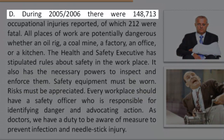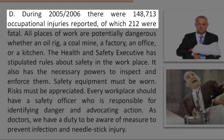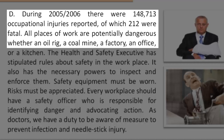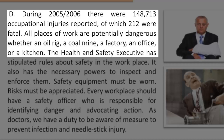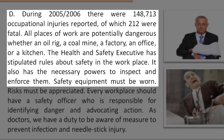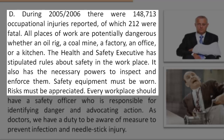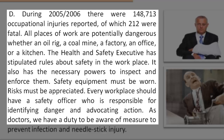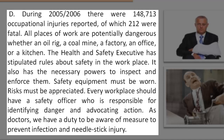Reading 4. During 2005 and 2006, there were 148,713 occupational injuries reported, of which 212 were fatal. All places of work are potentially dangerous, whether an oil rig, a coal mine, a factory, an office, or a kitchen. The Health and Safety Executive has stipulated rules about safety in the workplace. It also has the necessary powers to inspect and enforce them. Safety equipment must be worn. Risks must be appreciated. Every workplace should have a safety officer who is responsible for identifying danger and advocating action. As doctors, we have a duty to be aware of measures to prevent infection and needle stick injury.